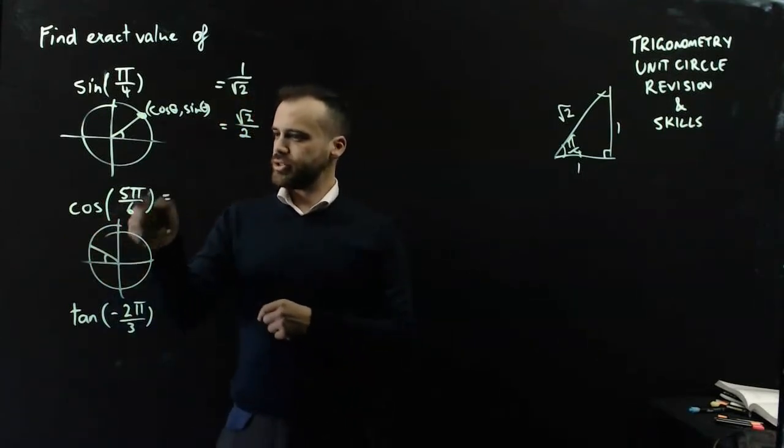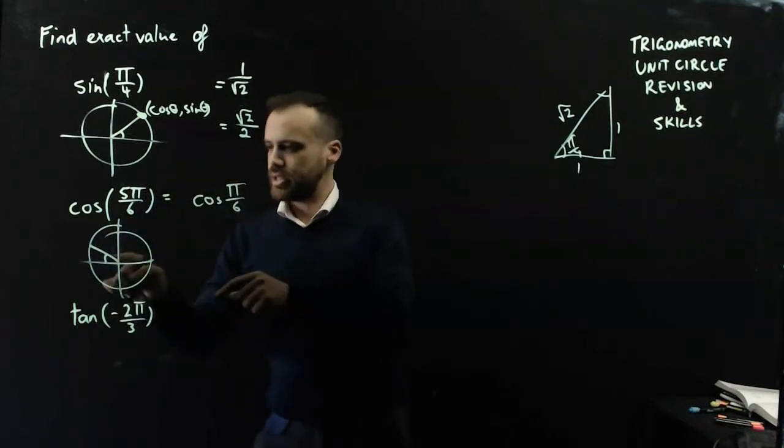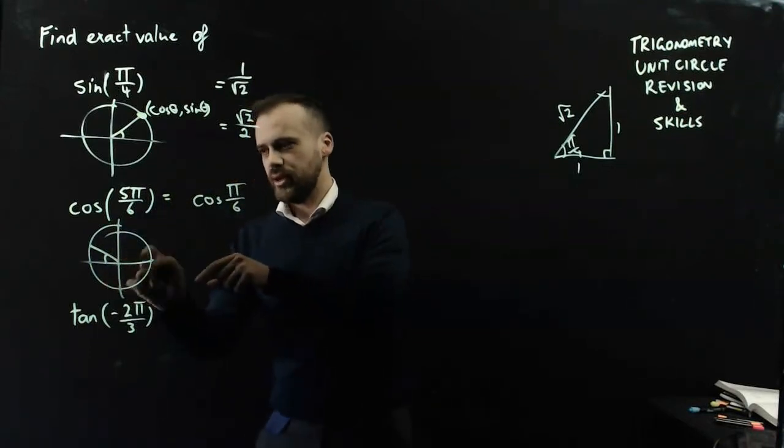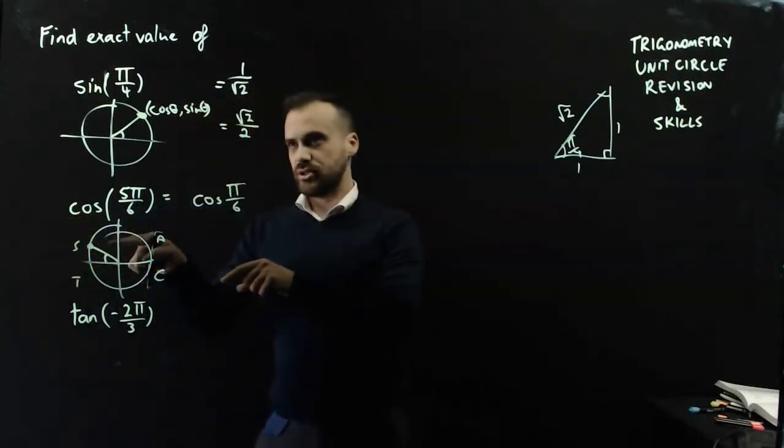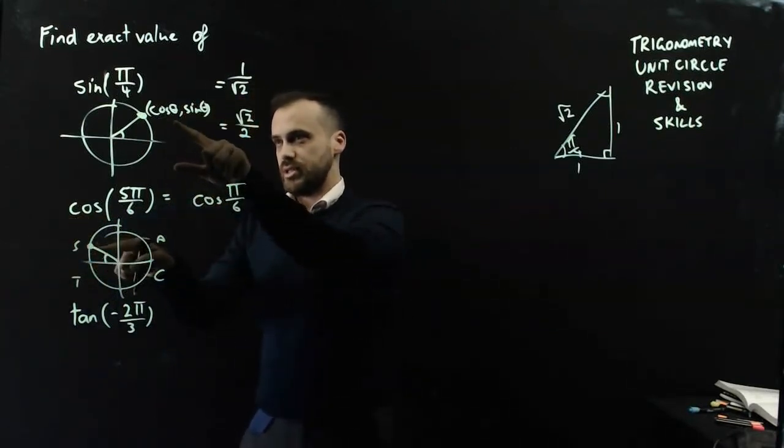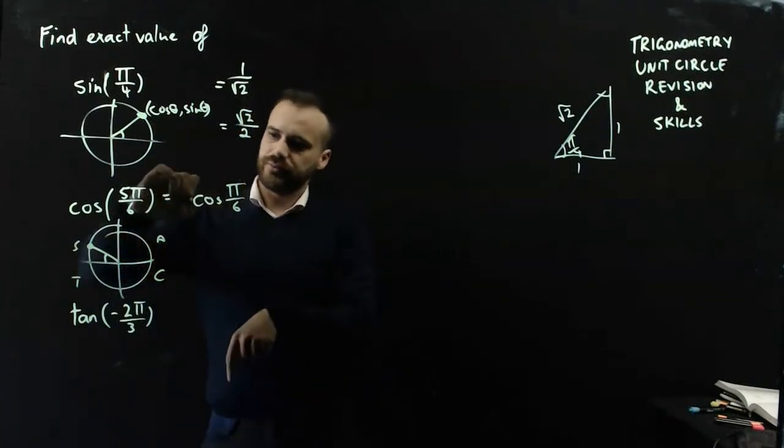So I can say that cos 5π on 6 is equal to cos π on 6, that's my reference angle, but C, A, S, T, because this is the x-coordinate, because cos is the x-coordinate of the dot, it's going to be negative in the second quadrant.